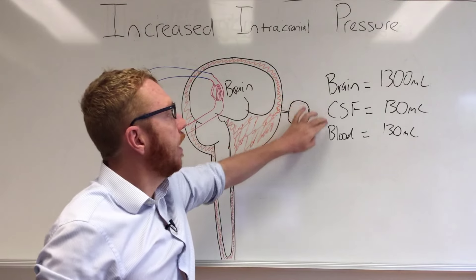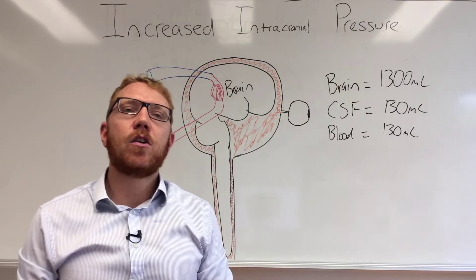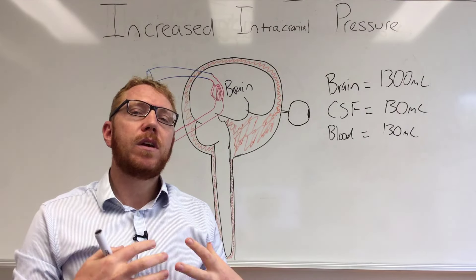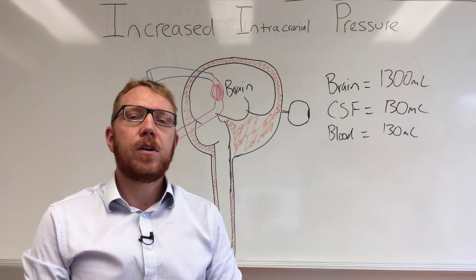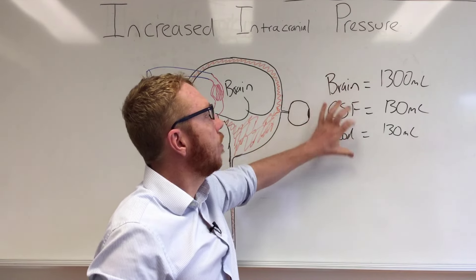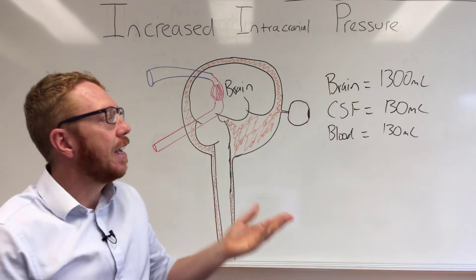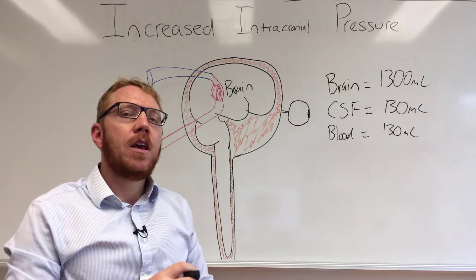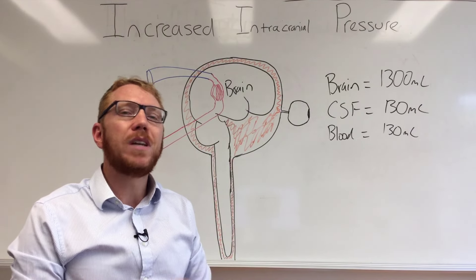These are the three volumes within the cranium and this gives us what we call the Monroe-Kelly doctrine, which basically says if any one of those three components increase in size, the intracranial pressure will increase with it.